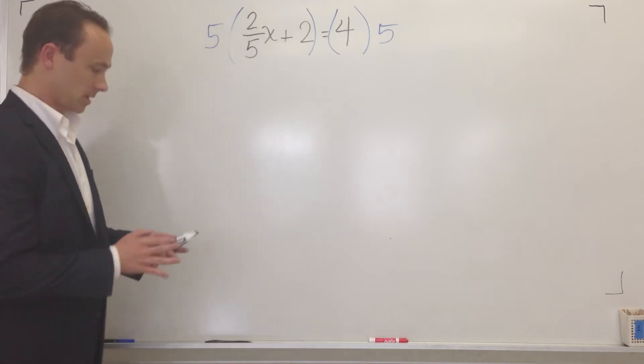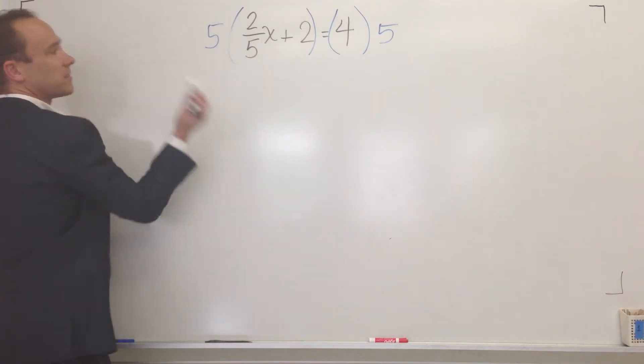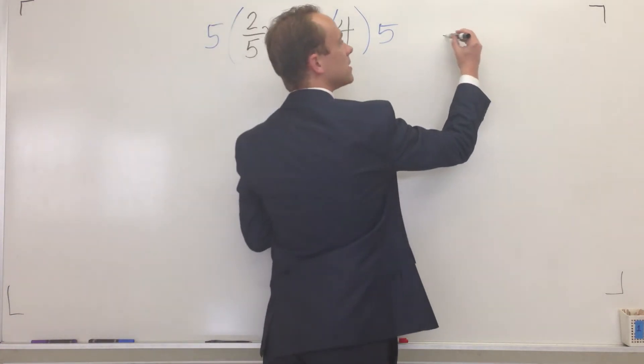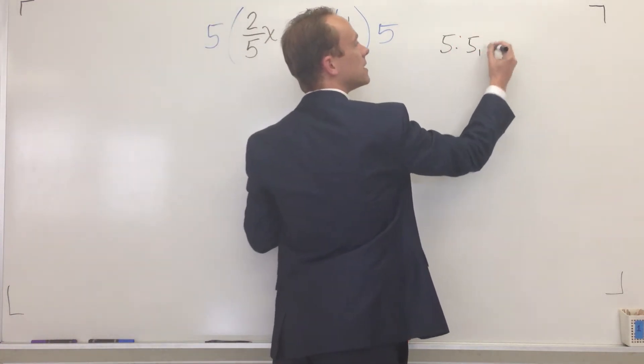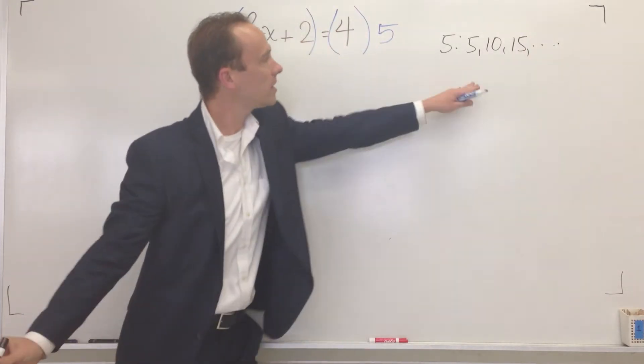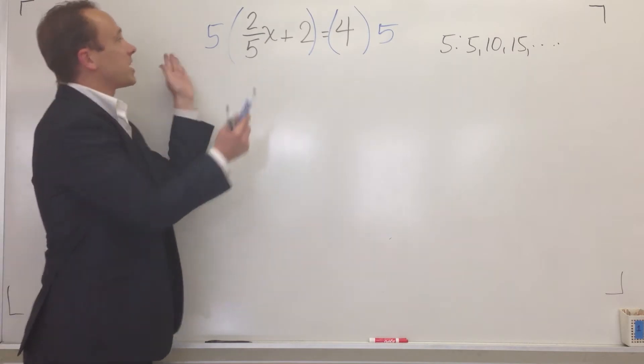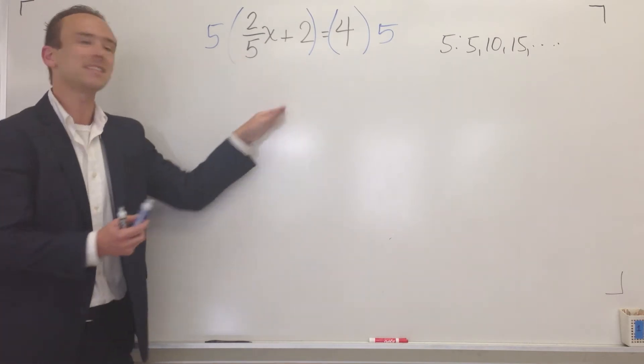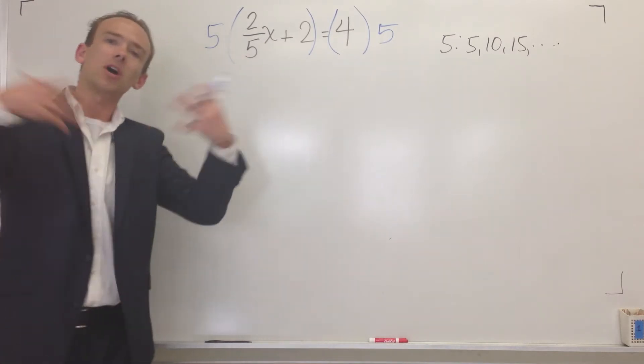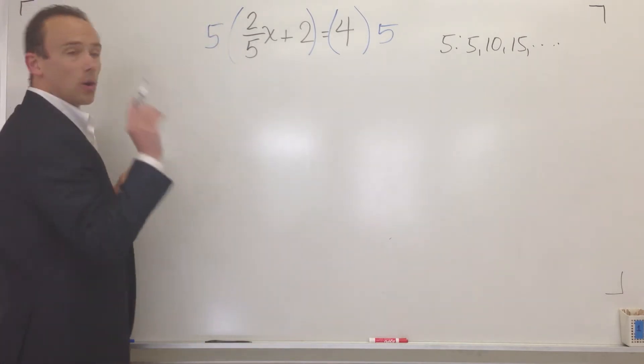Is five the only number I could have chose? No. I could choose any multiple of five. For instance, if I list my multiples of five, you got five, ten, fifteen, blah, blah, blah. Any one of those numbers would blow up this fraction. The only reason we generally choose five in this case is because it's the smallest. And smaller numbers are easier to multiply.